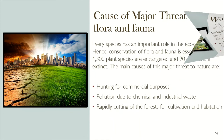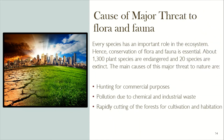Causes of Major Threat to Flora and Fauna: every species has an important role in the ecosystem, hence conservation of flora and fauna is essential. About 1,300 plant species are endangered and 20 species are extinct. The main causes of this threat are hunting for commercial purposes, pollution due to chemical and industrial waste, and rapidly cutting of forests for cultivation and habitation.